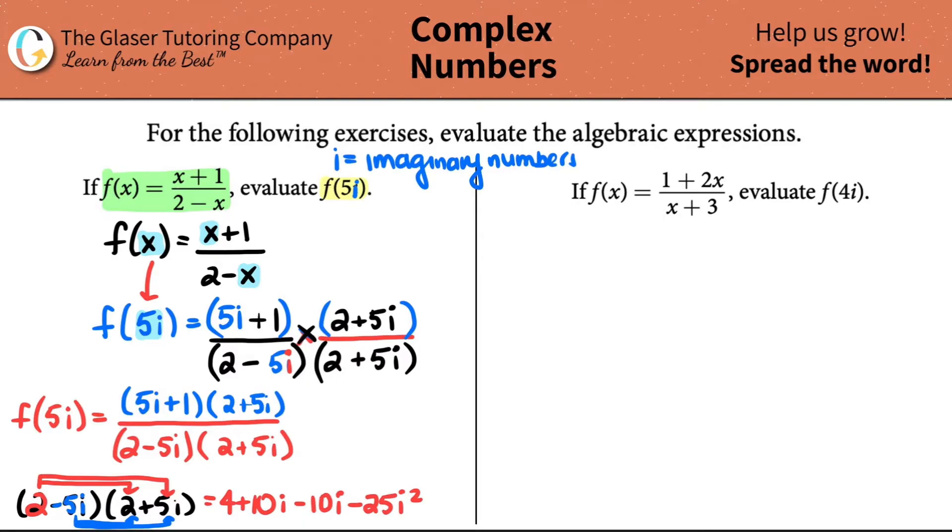So let's get down to it. 2 times 2 is 4. 2 times a 5i is plus 10i. Negative 5i times 2 is a negative 10i. And then negative 5i times a positive 5i is a negative 25i squared. Now, we just got to clean up the terms. 10i minus 10i is gone. They get rid of each other. So now I'm left with 4 minus 25i squared.